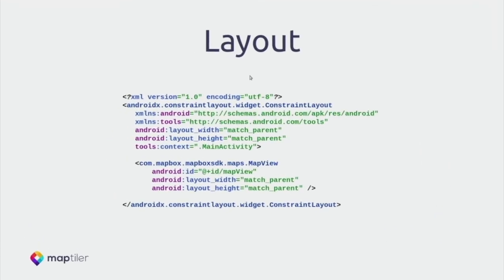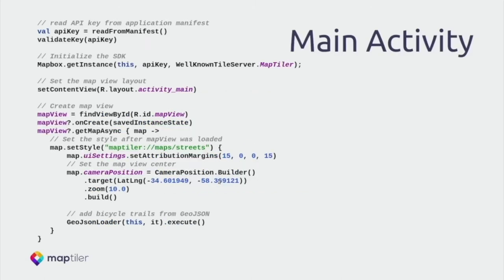The layout we'll use is very simple — just a ConstraintLayout with almost nothing in it. The most important part is the `mapbox.sdk.maps.MapView` control. We give it the name `mapView` and make it full screen. That's all.